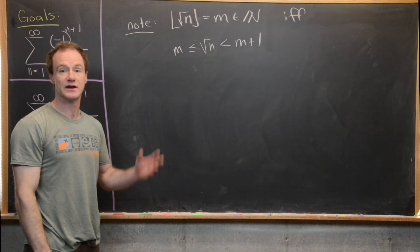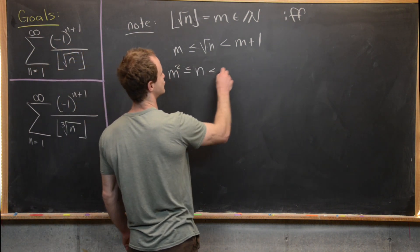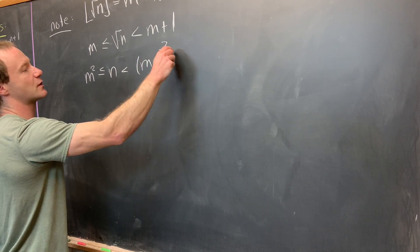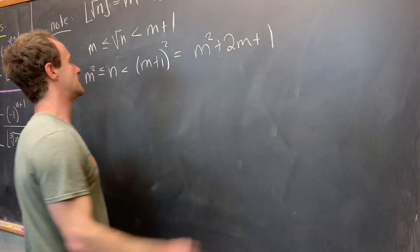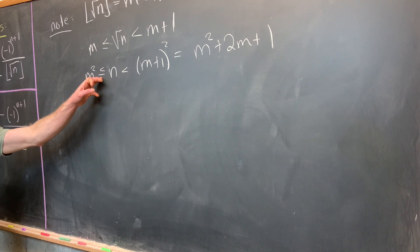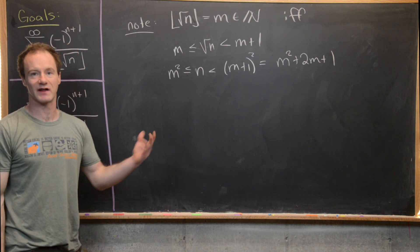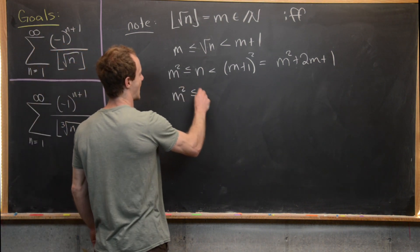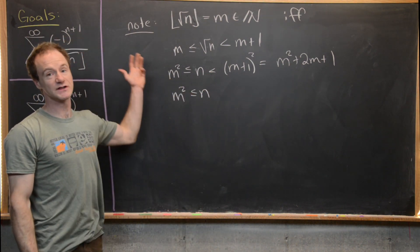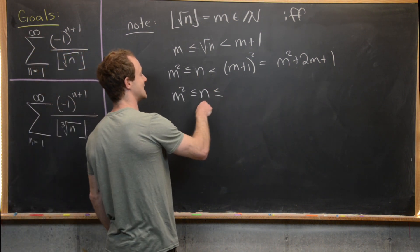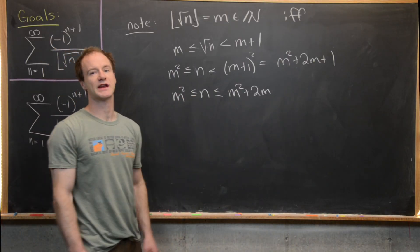Now we'd like to get rid of the square roots, and we can do that by squaring all parts of the inequality. That gives us m squared is less than or equal to n, which is strictly less than m plus 1 quantity squared, which equals m squared plus 2m plus 1. Since n is strictly less than m squared plus 2m plus 1 and n is a natural number, we get n is less than or equal to m squared plus 2m, by the discreteness of the natural numbers.